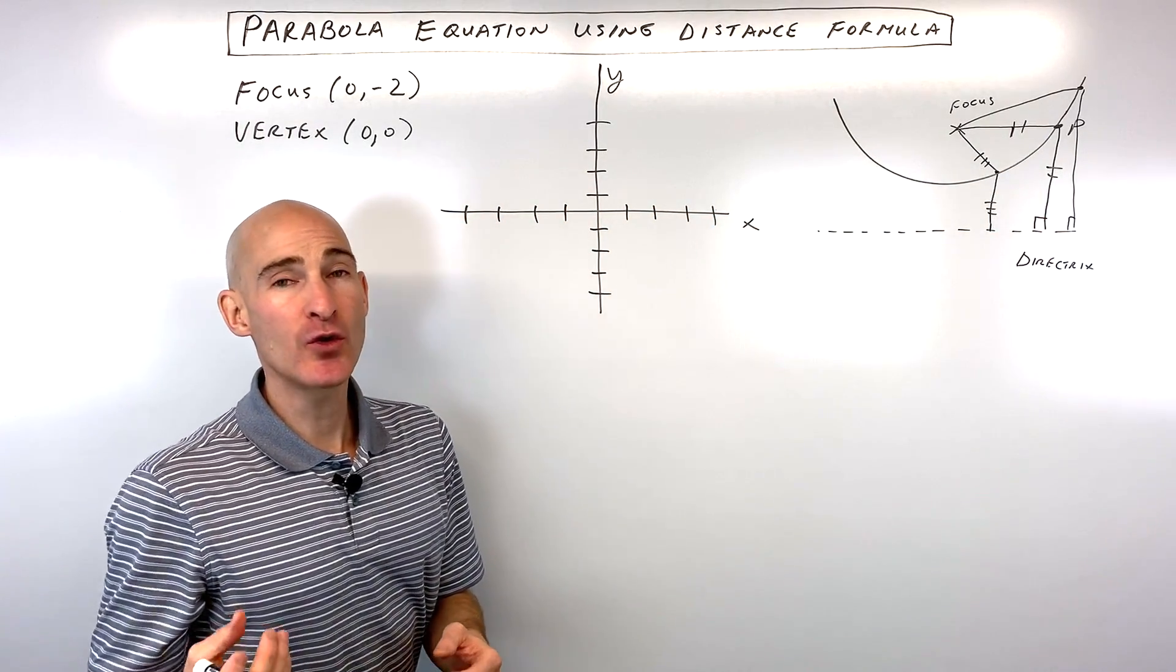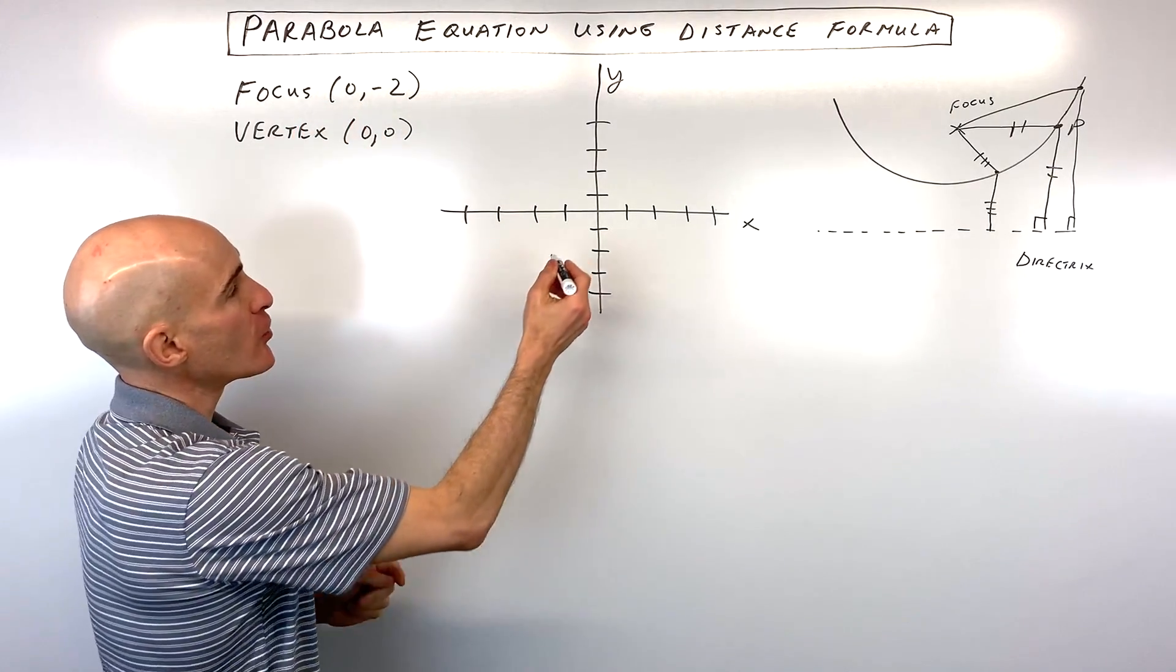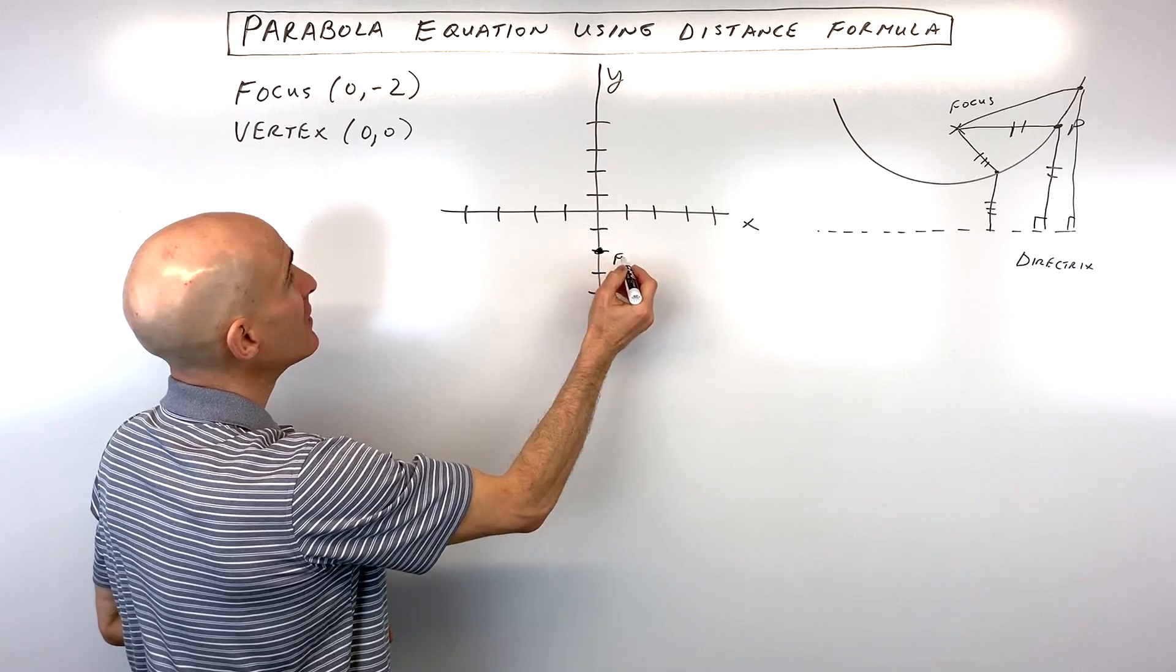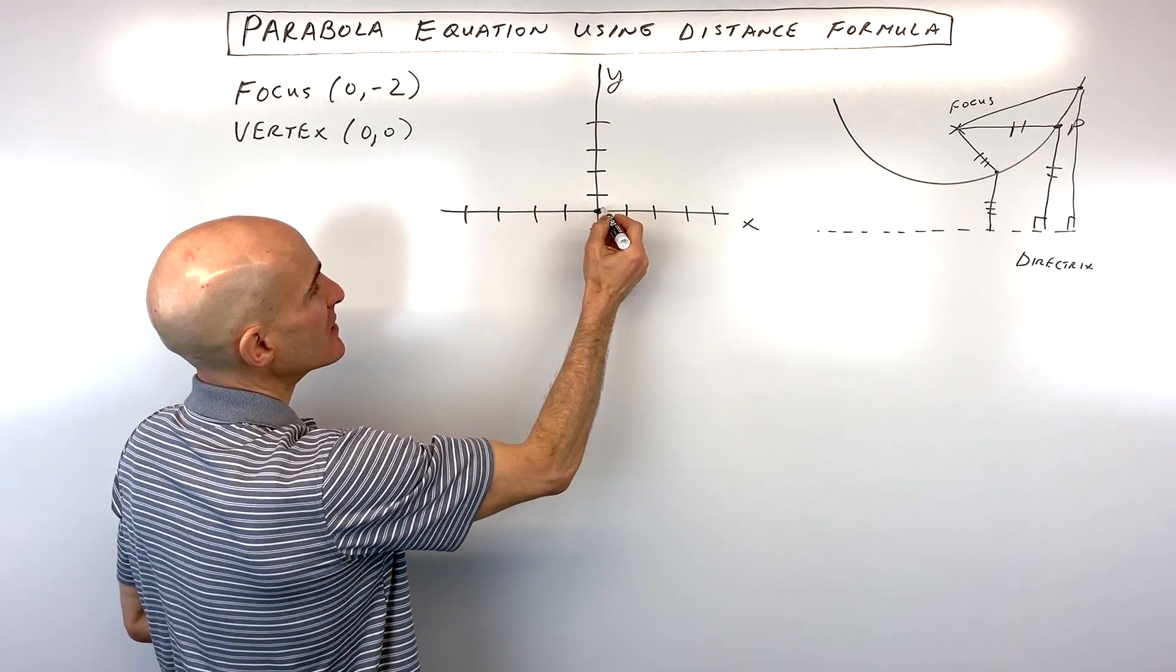So we're going to use that fact to write the equation of a parabola in this particular example where the focus is at (0, -2). So right there is our focus. And our vertex is at (0, 0). There's our vertex.